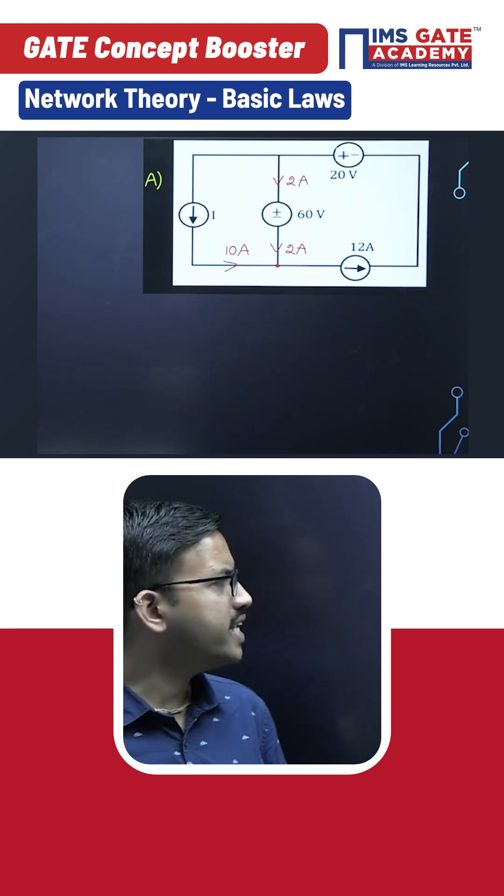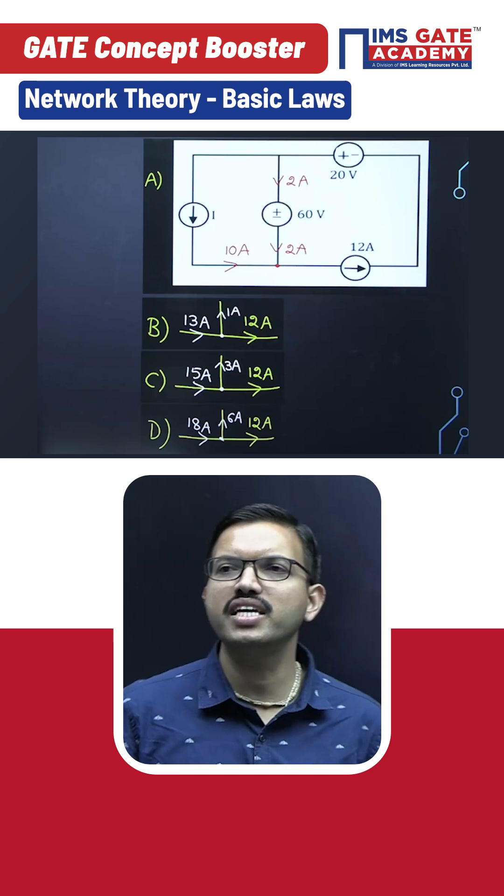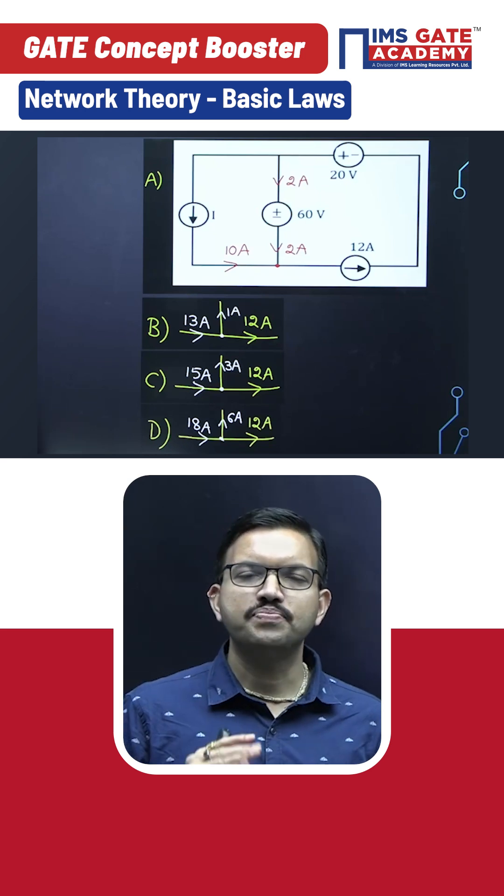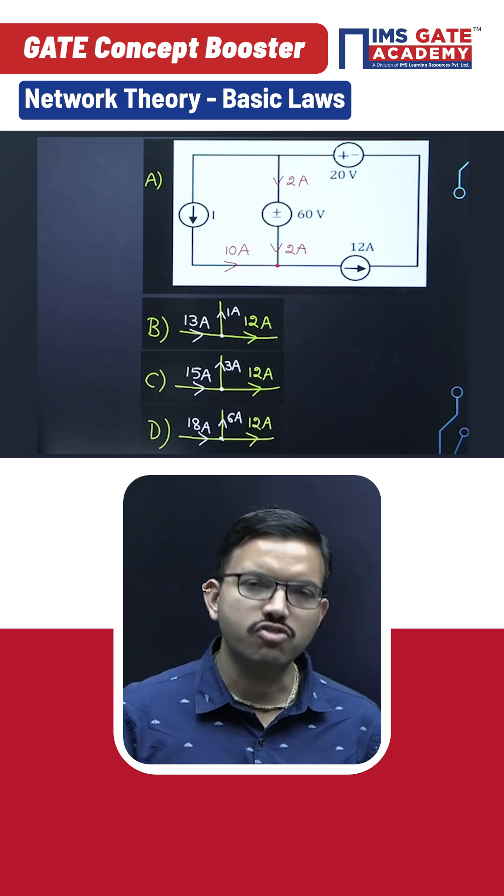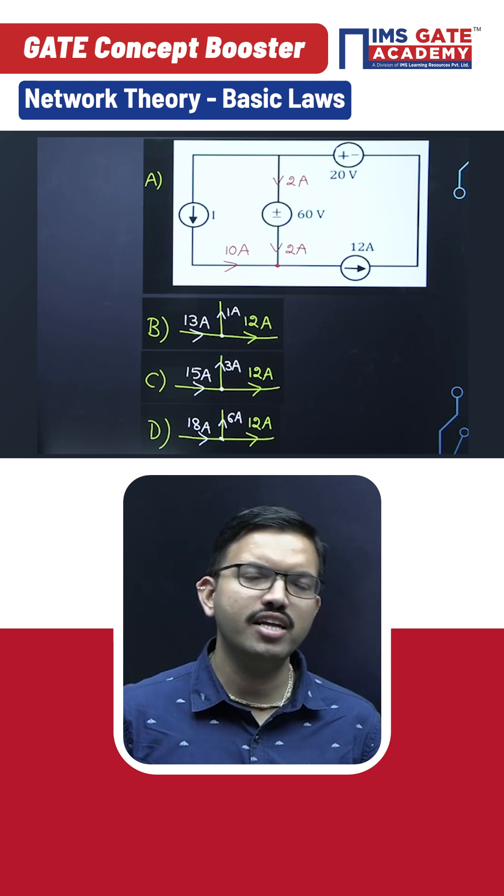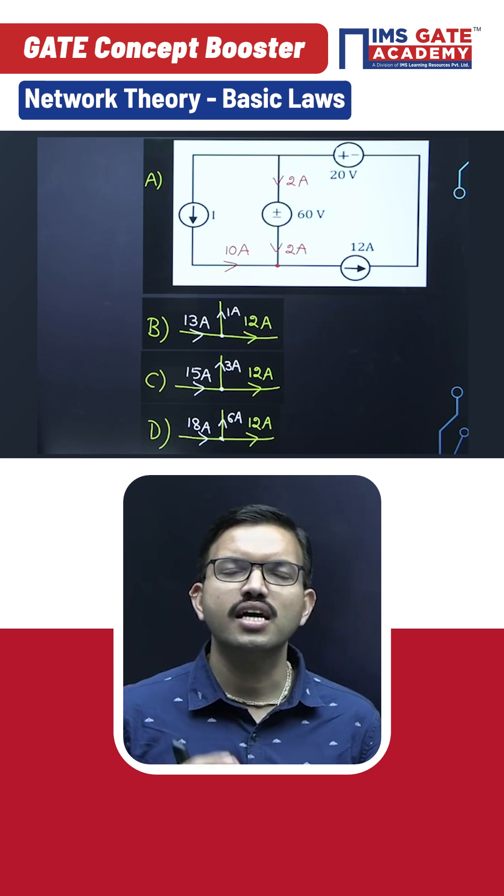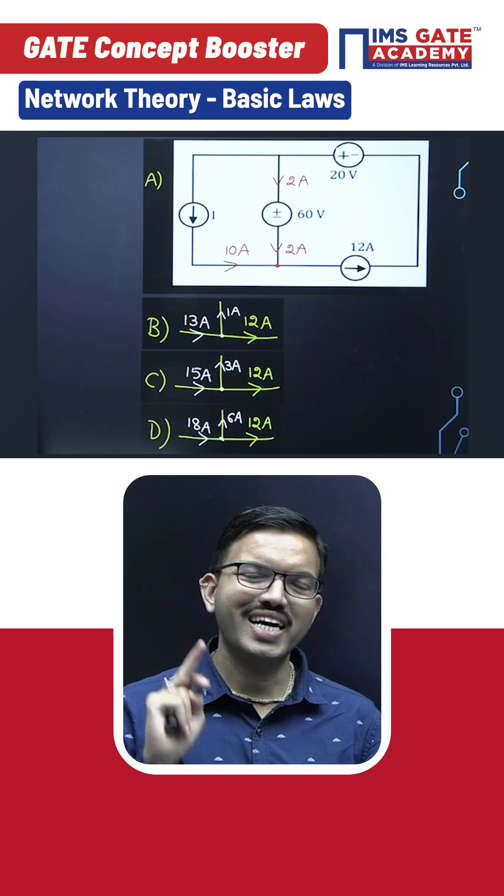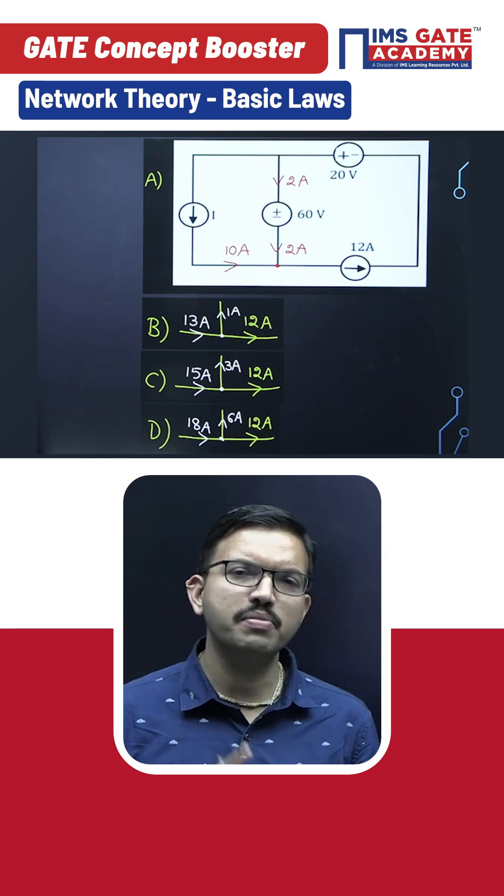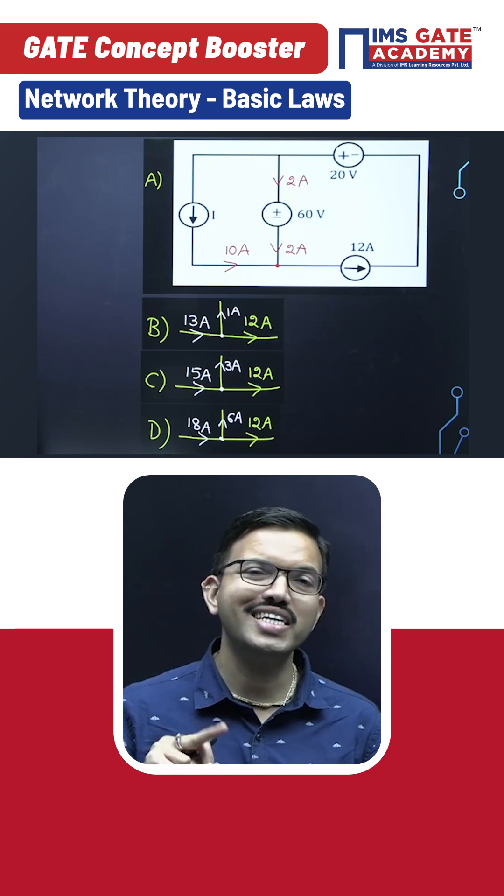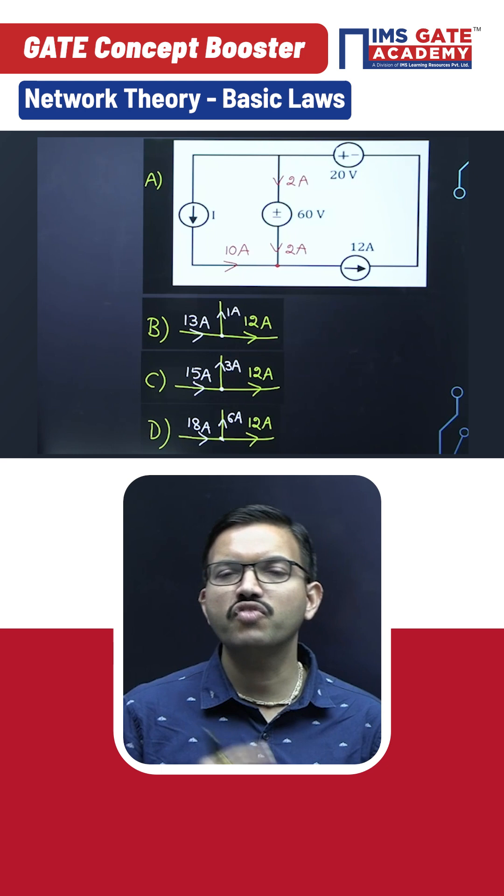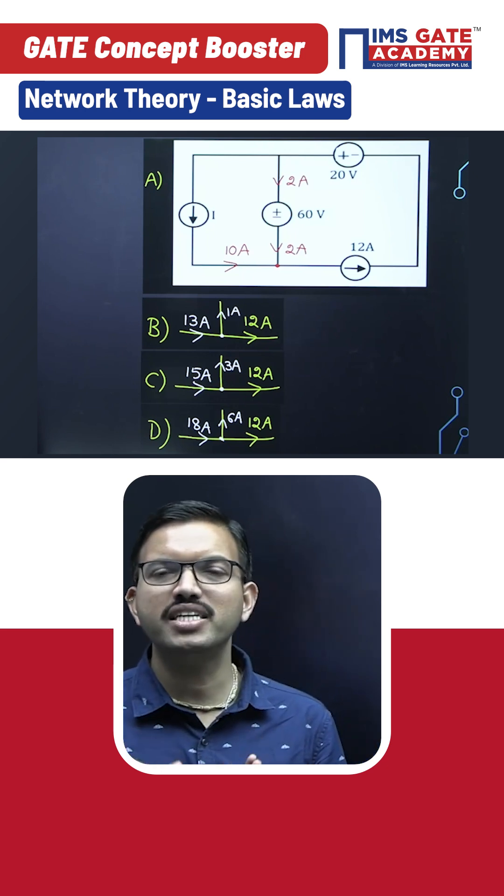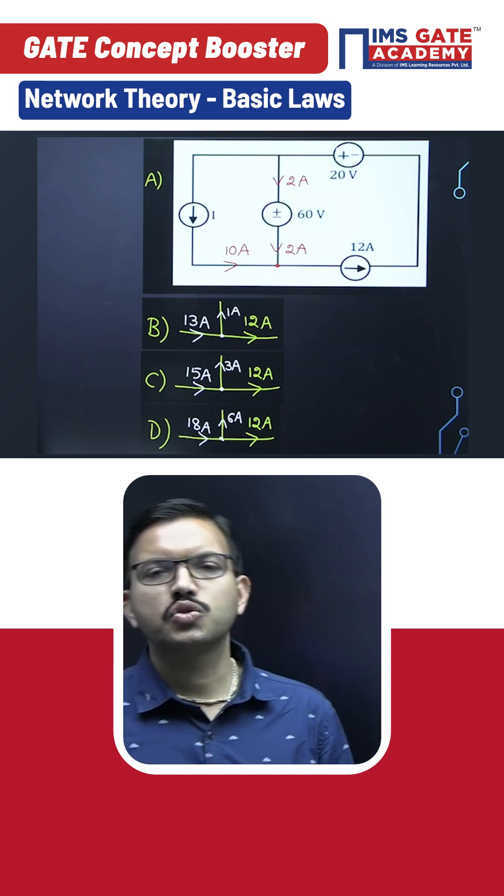Whereas if you observe the remaining three choices—option B, option C, option D—those values are more than 12 ampere regarding i value. In all these cases, the current flowing through the 60 volt source will be upward. So current with respect to options B, C, D leaves from positive. Whenever current leaves from positive, that element will deliver power.